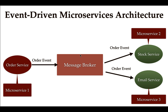You can use any message broker you want for asynchronous communication between multiple microservices. Whenever a customer places an order, the order service will create an order event and publish it to the message broker. The stock service and email service are consumers that subscribe to the message broker, so as soon as the order service publishes the order event, these two microservices will receive it.